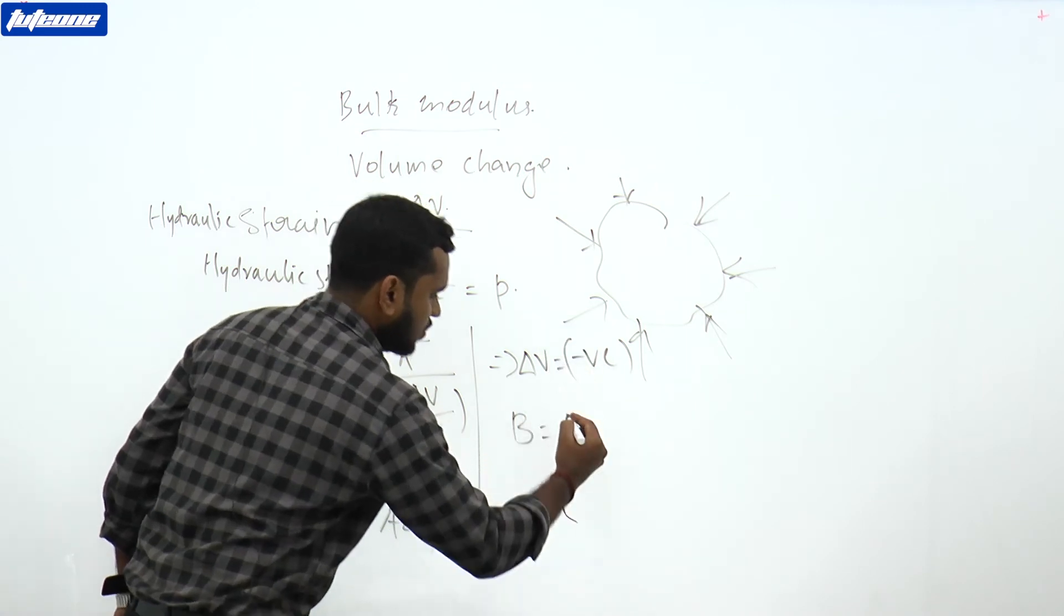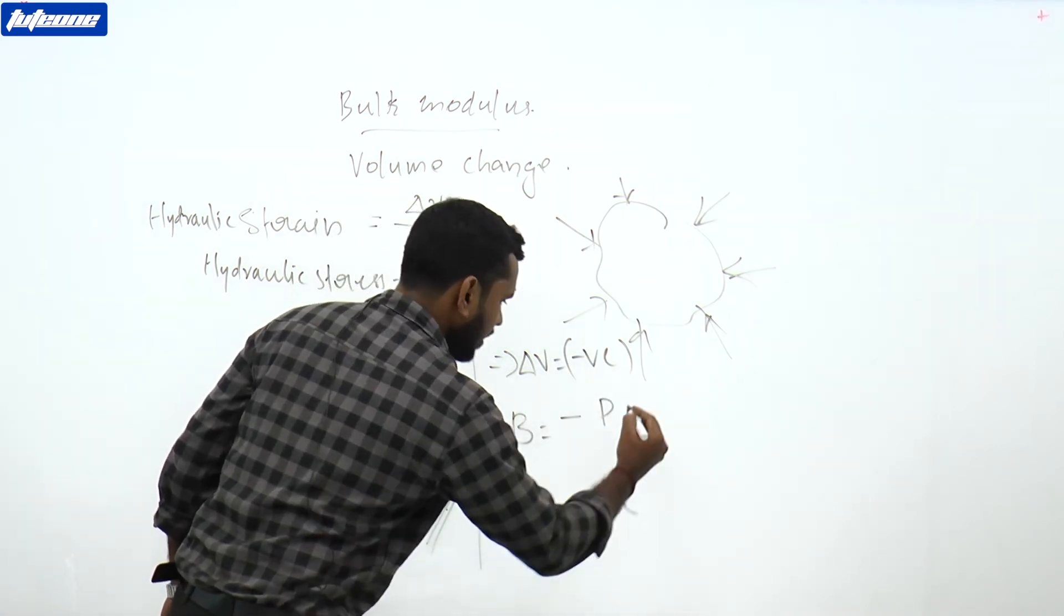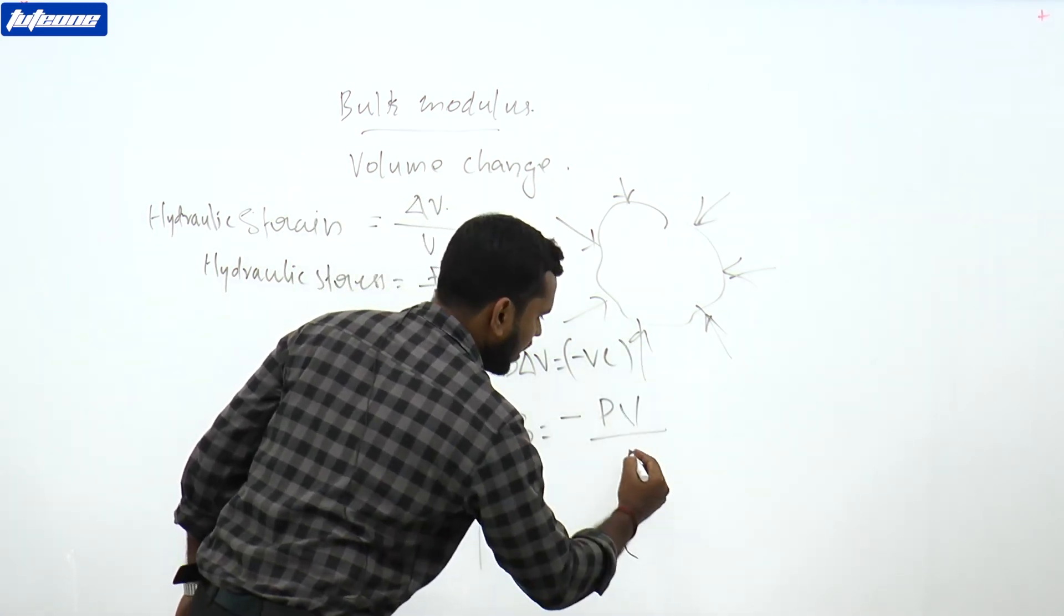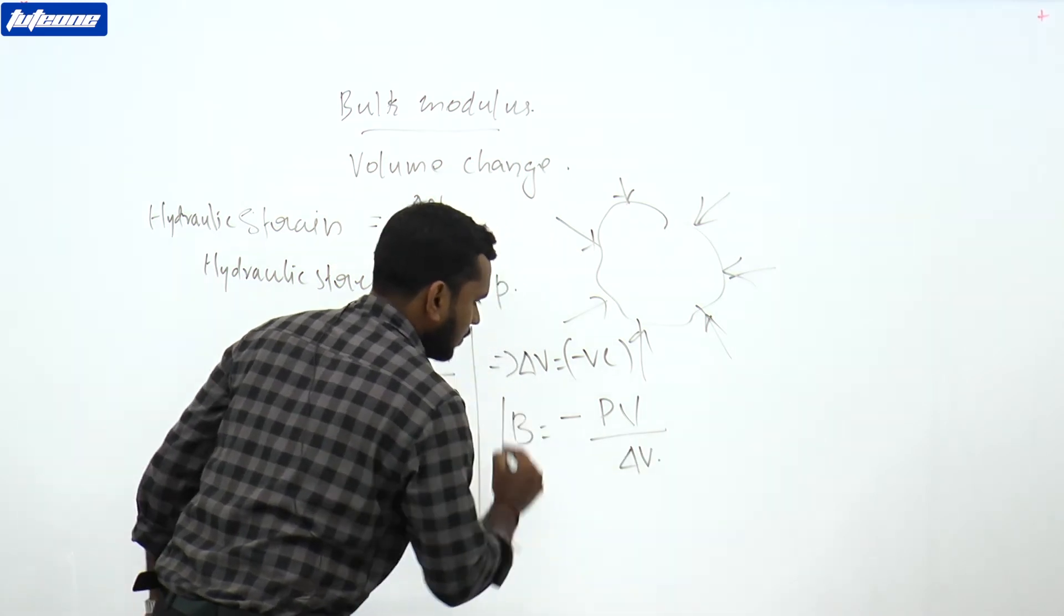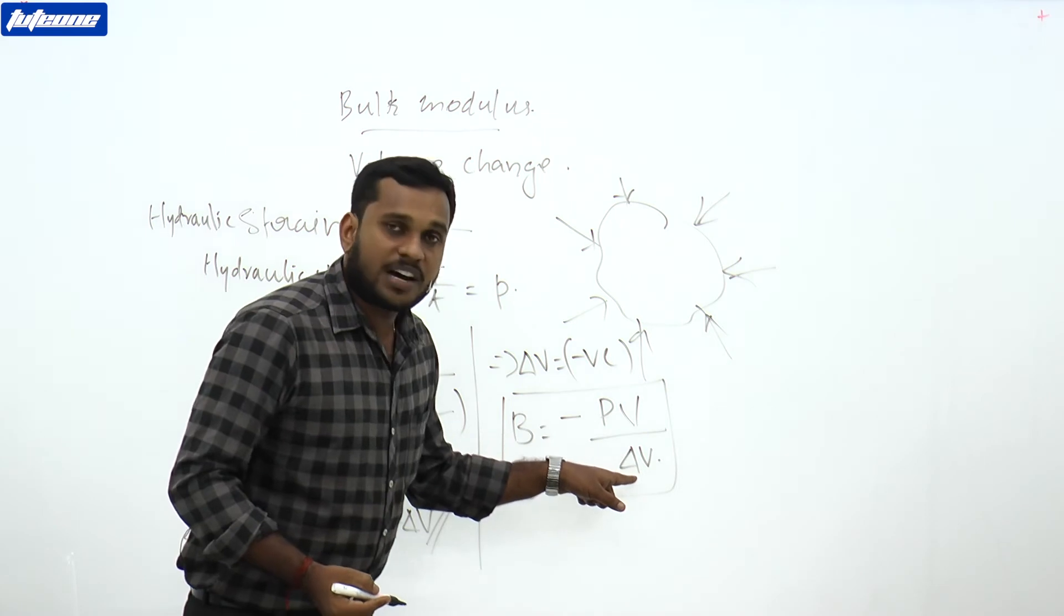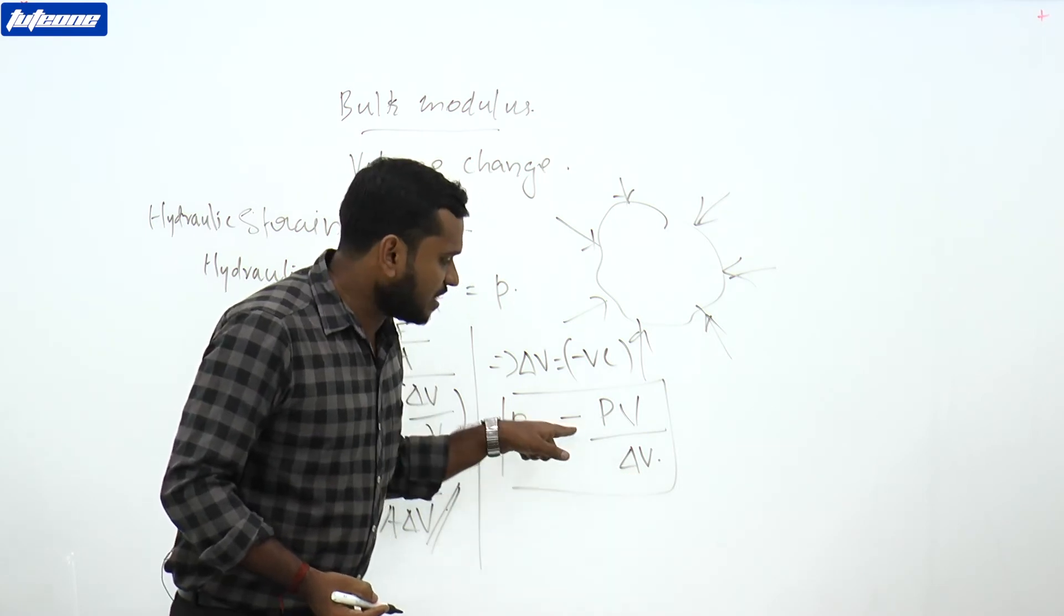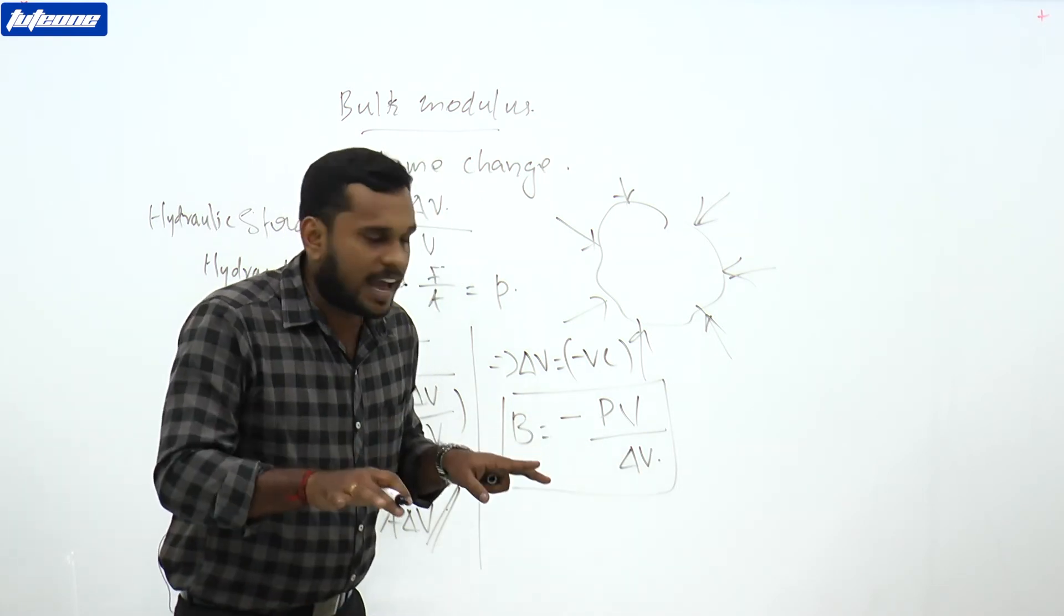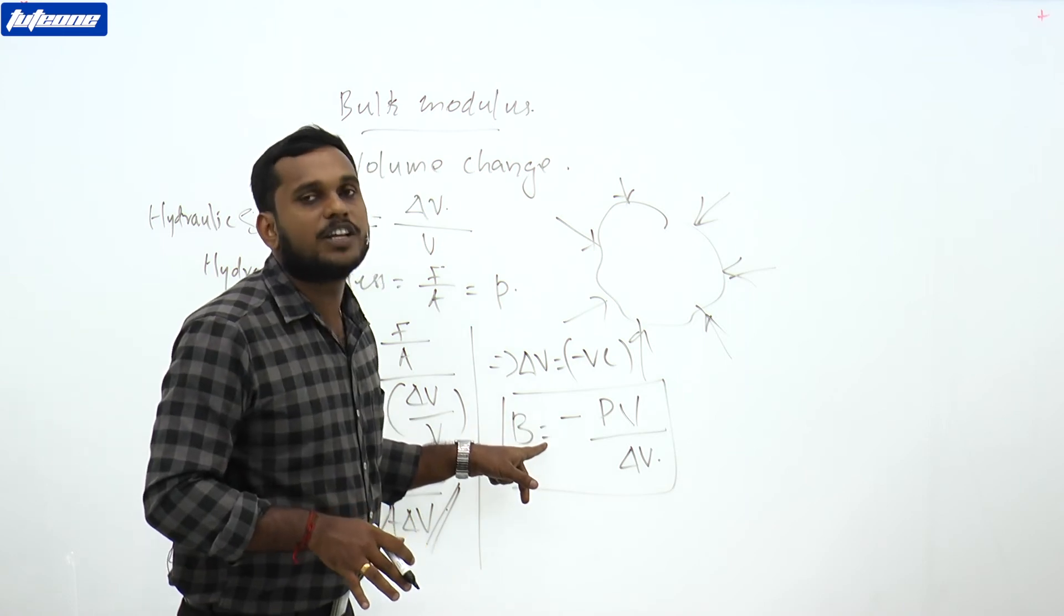To neutralize this, we add an additional negative sign here so that bulk modulus can be written as minus PV divided by delta V. When delta V is negative, this negative and that negative will get cancelled, and bulk modulus will always be positive.